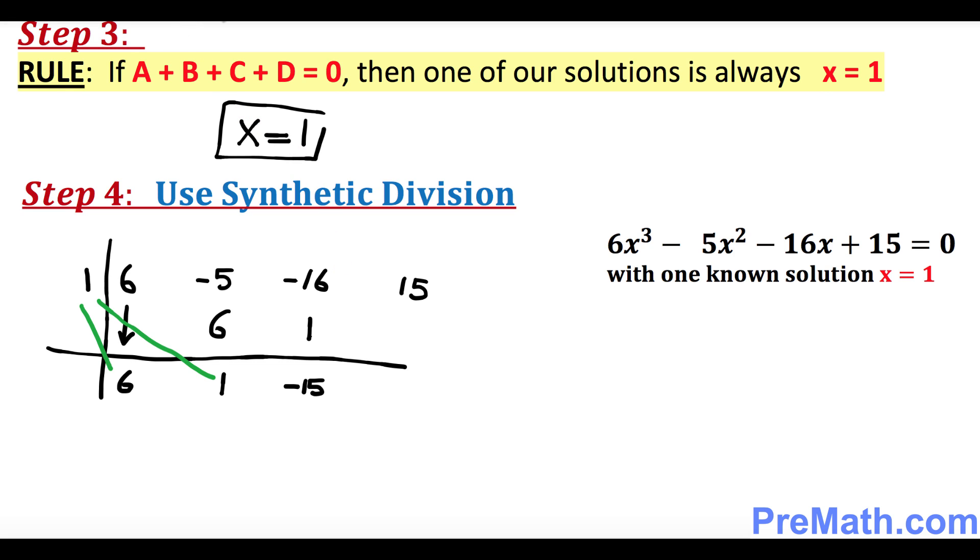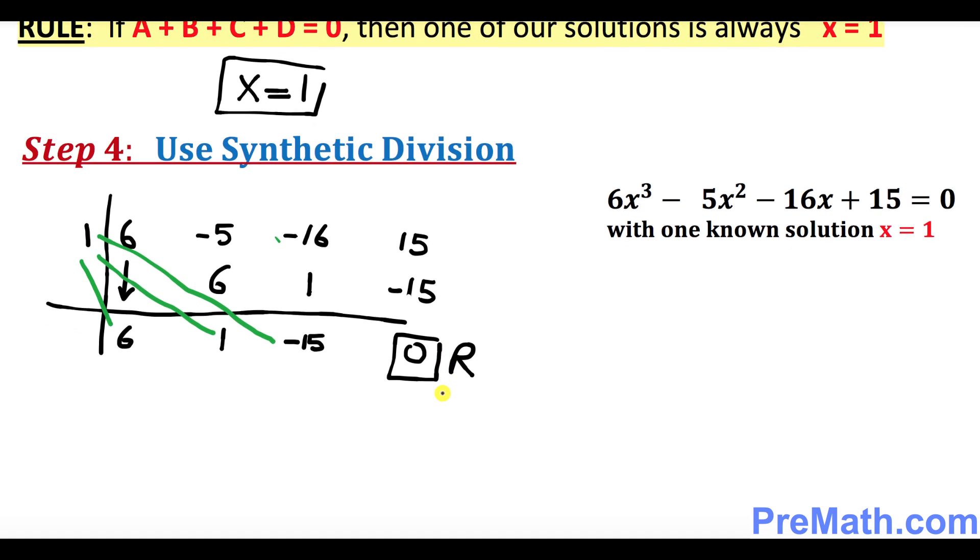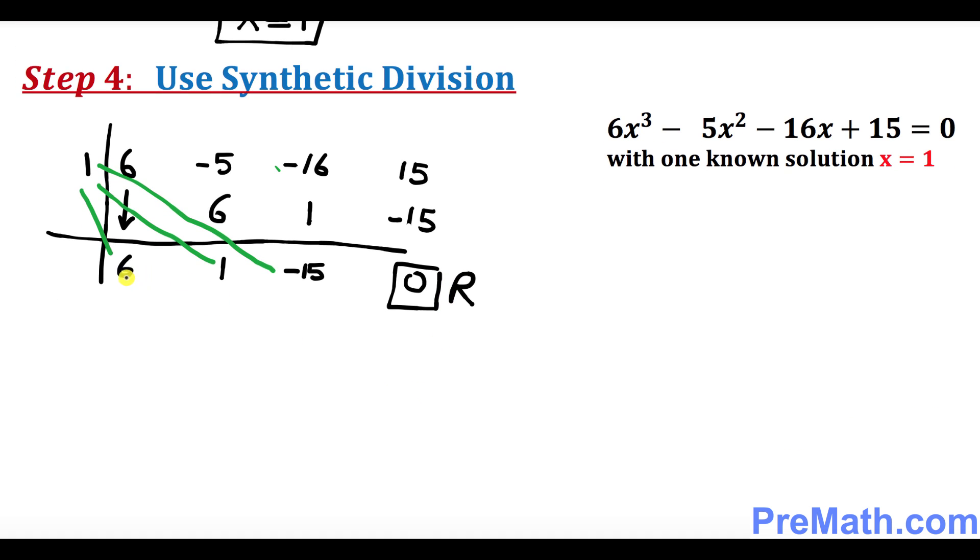Once again, we're going to multiply this 1 times negative 15. So 1 times negative 15 is negative 15 right up here. 15 and negative 15, when you add them, gives you 0. That is your remainder. So we ended up with these numbers 6, 1 and negative 15.